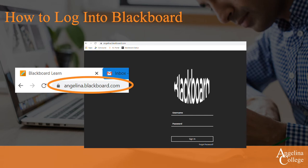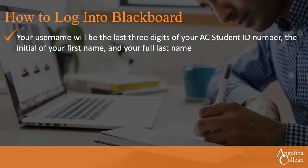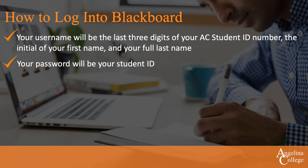Now that you're on the Blackboard login page, you'll need to enter your username and password. Your username will be the last three digits of your AC student ID number, the initial of your first name, and your full last name. Your password will be your student ID.